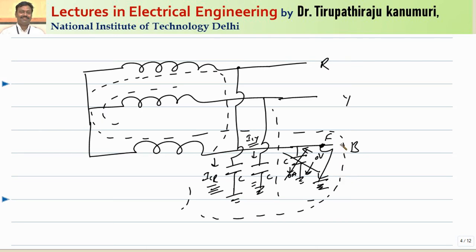The current passing through the R phase capacitance and the Y phase capacitance will close through the B phase — that means through this fault. The fault current can pass and the closed circuit is possible for this winding. Because when this winding is connected to ground and there is no grounded neutral, the only option the current can close is through these capacitive currents. Now, the capacitor of the R phase is connected between R phase and ground, and that ground is now connected to B phase. So the current ICR will be due to the voltage between R phase and B phase — that is Vrb. Similarly, the current through CY will be due to the voltage between Y phase and B phase — Vyb.